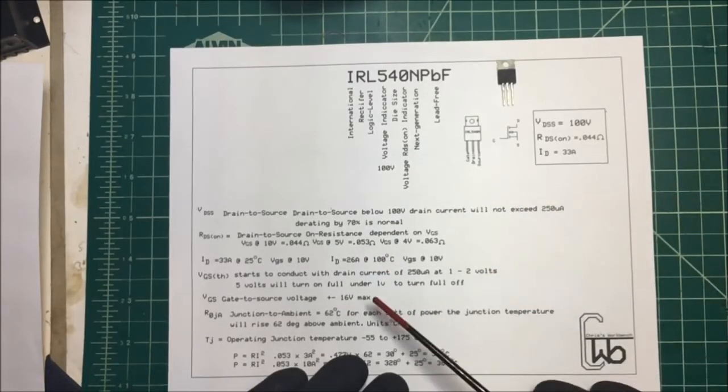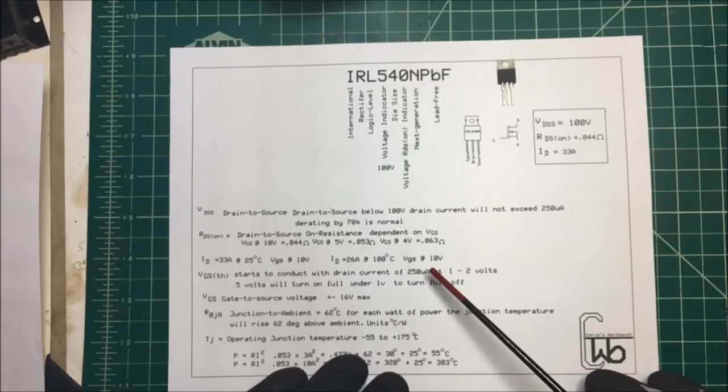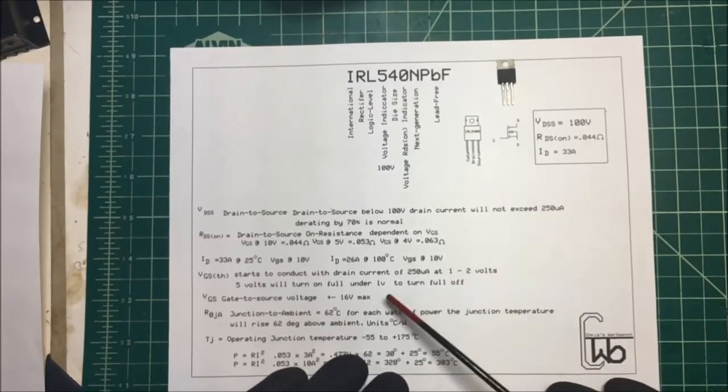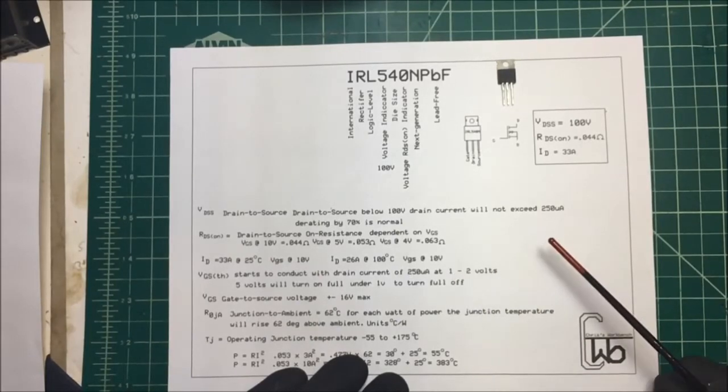Now what you want to take away from this is that in order to turn it off, you want to be below the volt here because it's going to start to conduct at a volt. If you leave a volt on there, you're going to have some current flowing through from the drain to the source. So to turn it on we're going to do five volts, and I'm going to go below one volt to turn it off.